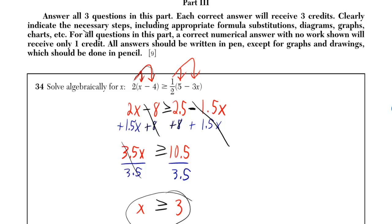Okay, so now 3.5x is greater than or equal to 10.5, and then I just divide both sides by 3.5, and I get x is greater than or equal to 3.